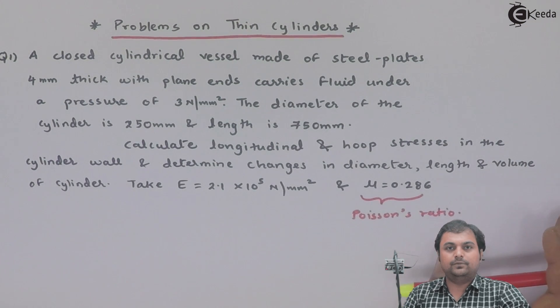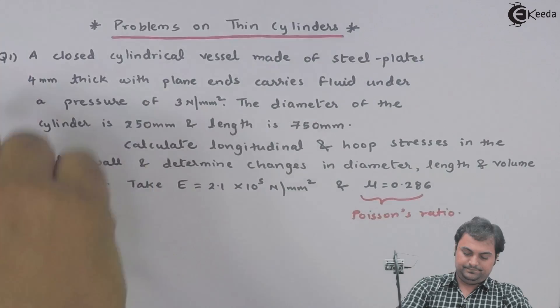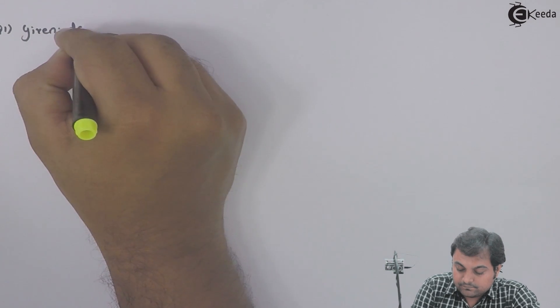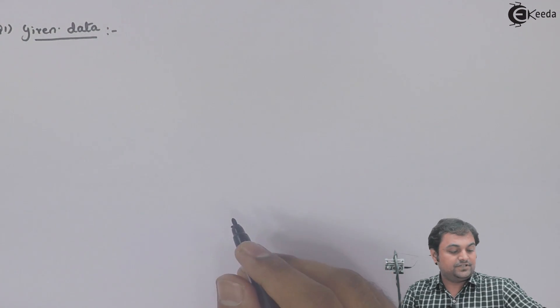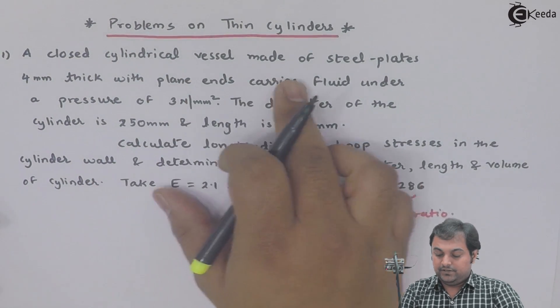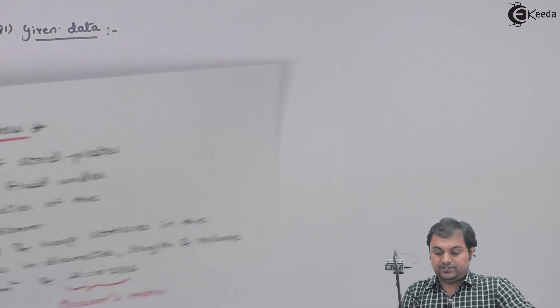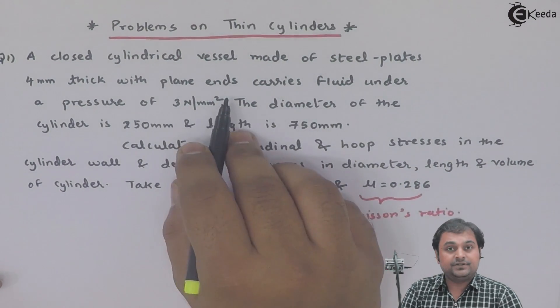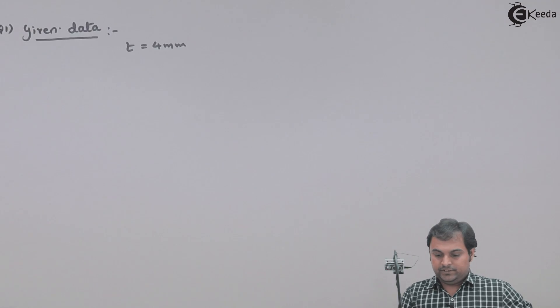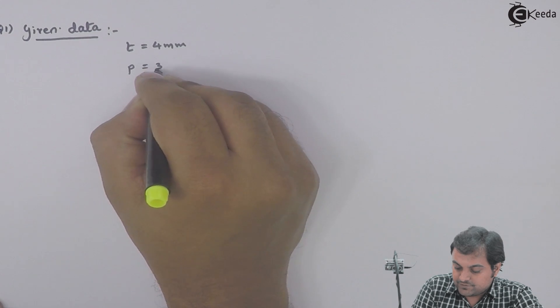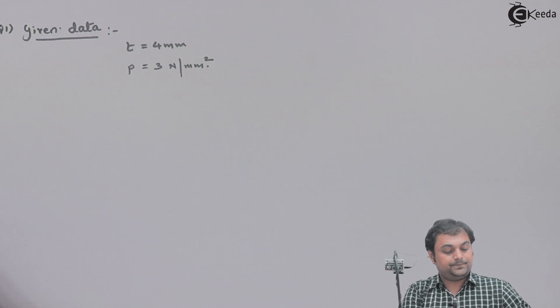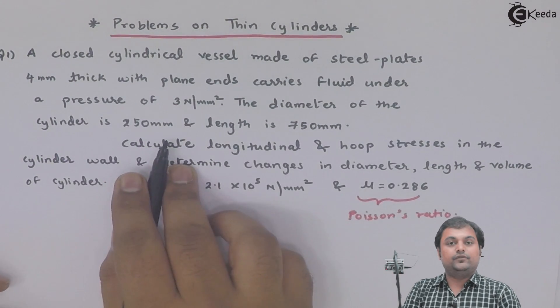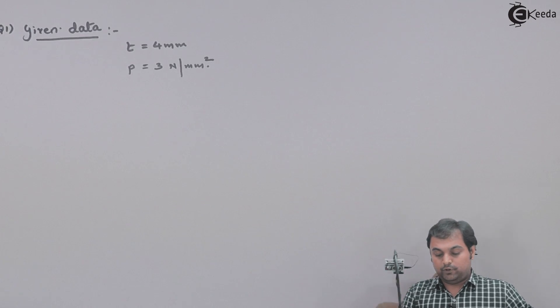Whatever is specified in this problem, we will write it in the form of data. This is our first problem on thin cylinders. It is given that a closed cylindrical vessel is made of steel plates 4 mm thick, so thickness t = 4 mm. It carries fluid under internal pressure P = 3 Newton per mm square. The diameter of the cylinder is 250 mm.